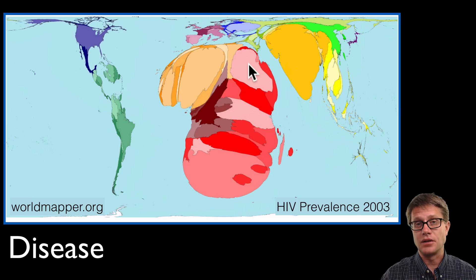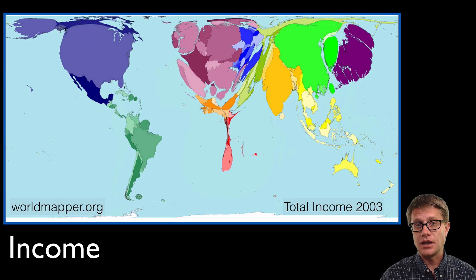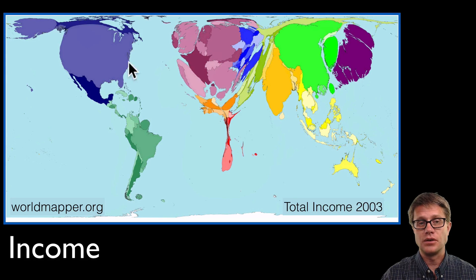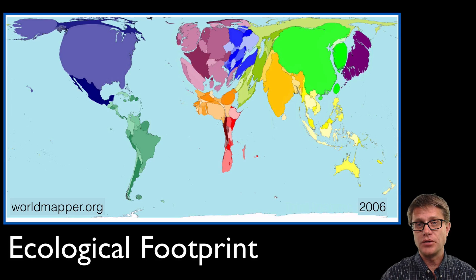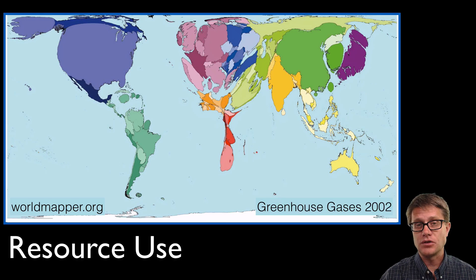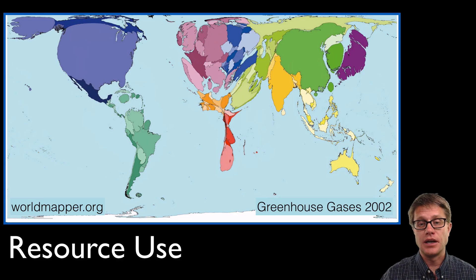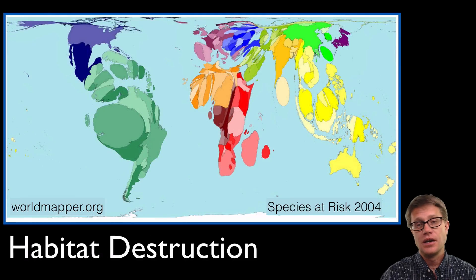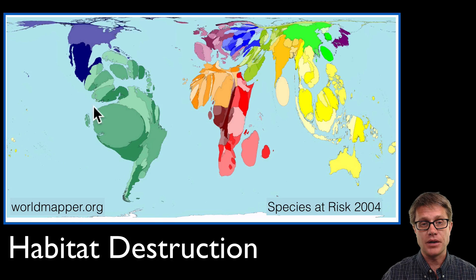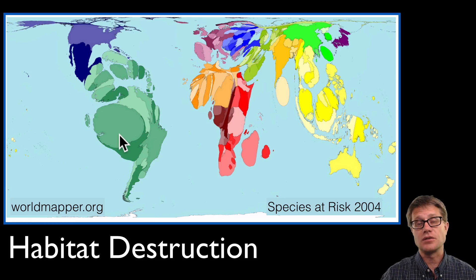If we look at income, we see that inverse relationship where developed nations have a higher income, especially western Europe and the United States. That has an almost direct relationship with ecological footprint — the greater the economy, the more impact on the earth. We could look at resource use: greenhouse gas emissions follow the economy as well. We could also look at habitat destruction. The whole world is connected, so increases in greenhouse gases can cause high extinction rates, and those are going to be in areas with many species — such as Ecuador in South America, where so many species are at risk.